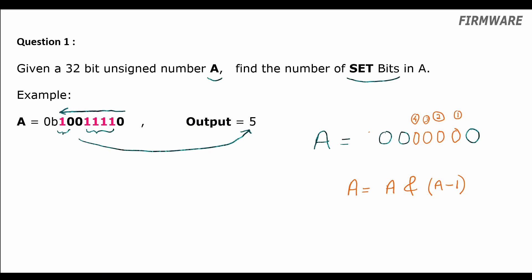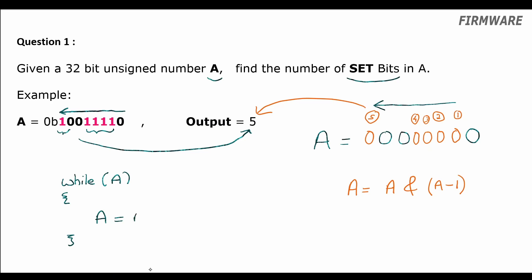If you see, how many times did we have to do this step? Five times — which is the same as the number of 1s in A. So what we could do is count the number of times we have to do the step of unsetting the rightmost 1 to find the number of set bits. We use a loop which exits once A becomes 0, and we keep doing A equal to A AND (A minus 1) inside the loop. We also keep a count: count equals 0 and count plus plus. This way, we won't need to iterate through all the bits in A — the number of iterations required is only equal to the number of 1s in A. So this is an optimized solution.